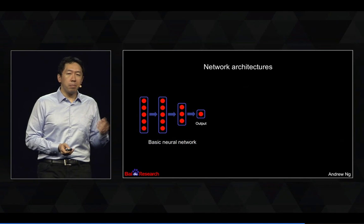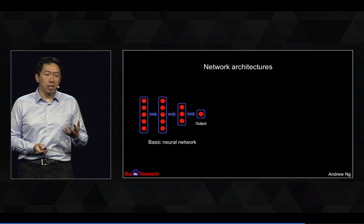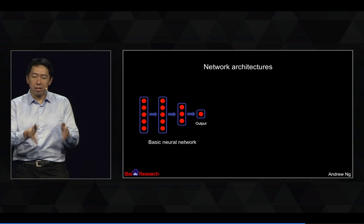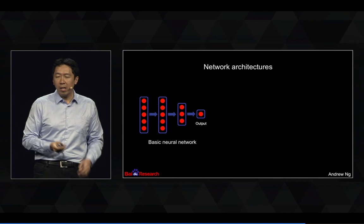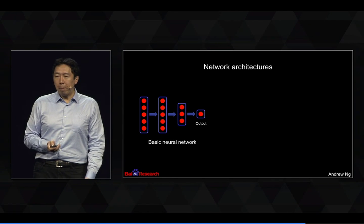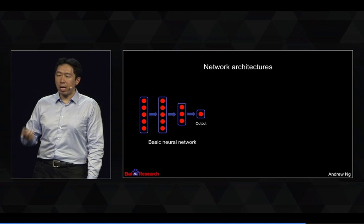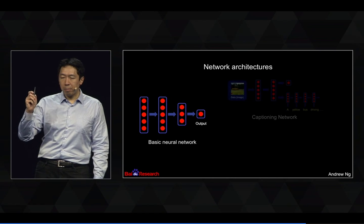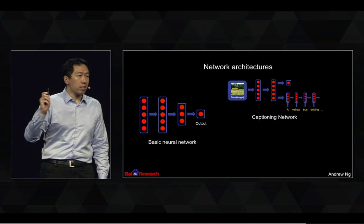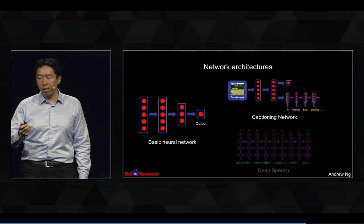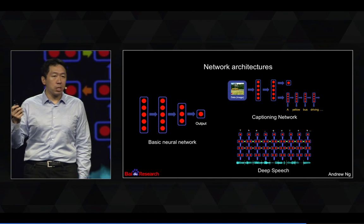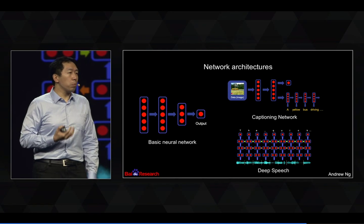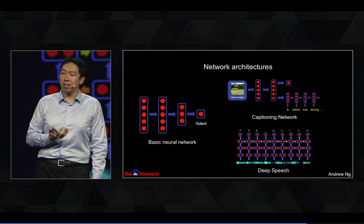I think of this as maybe the most basic neural network architecture — this or Yann LeCun's ConvNets, and so on, that's like the canon, maybe. But for new leading-edge applications, I shared with you examples like our captioning network architecture or our Baidu Deep Speech architecture. And it was a lot of work to figure out these architectures.